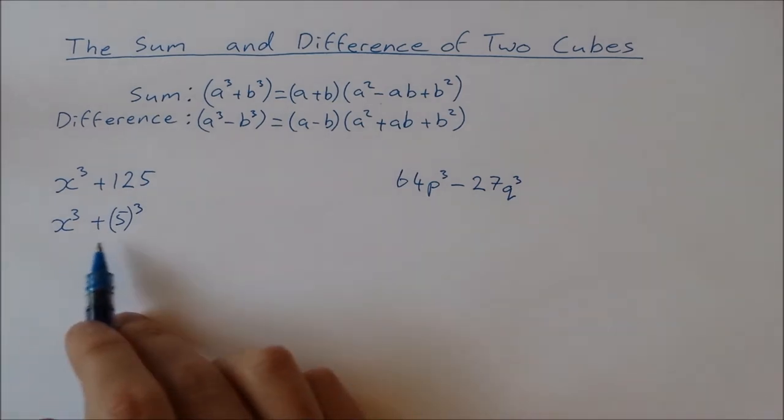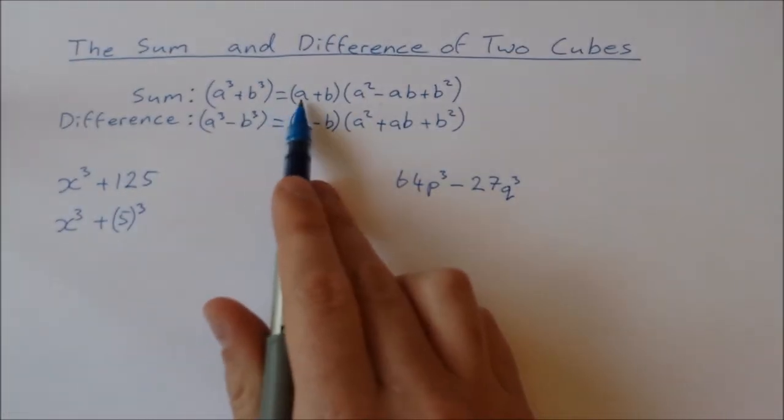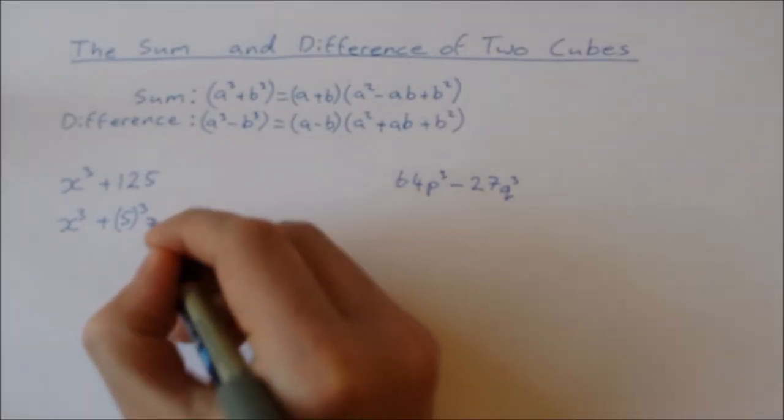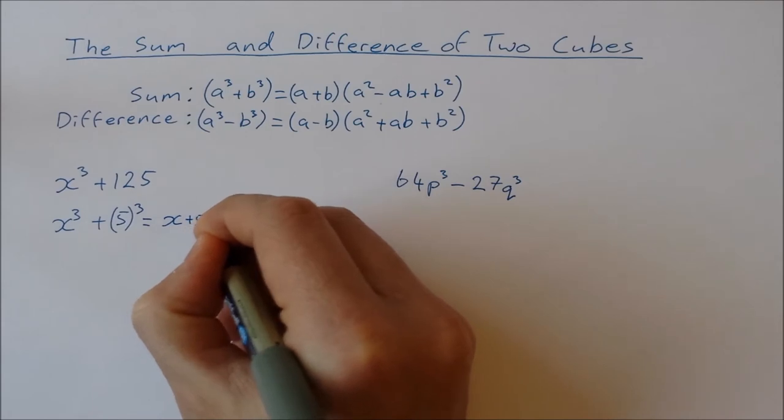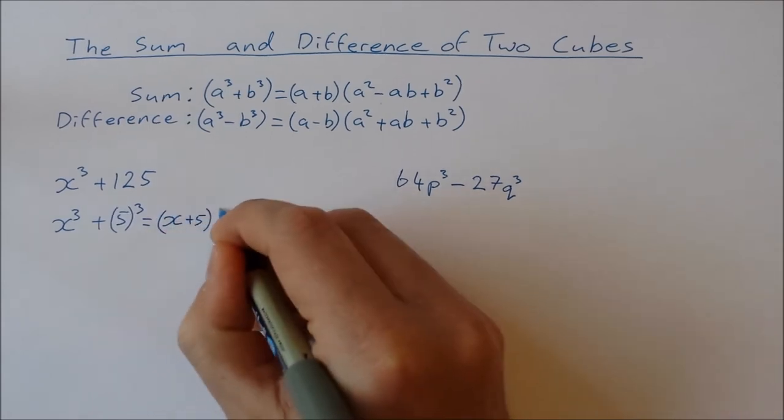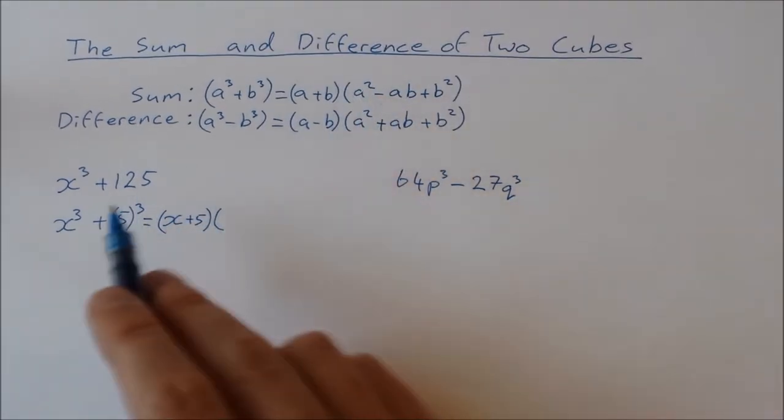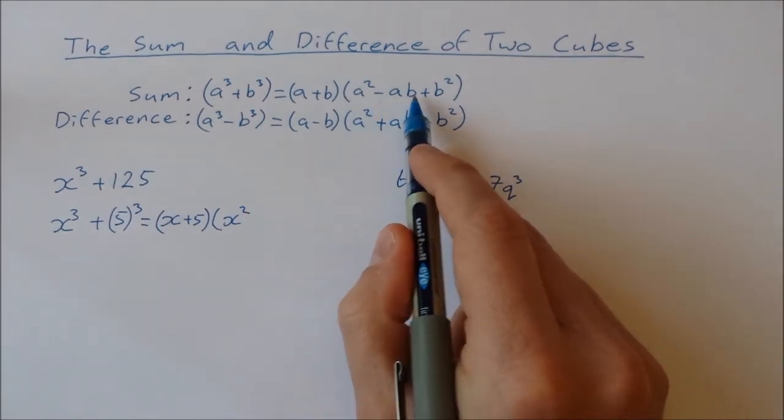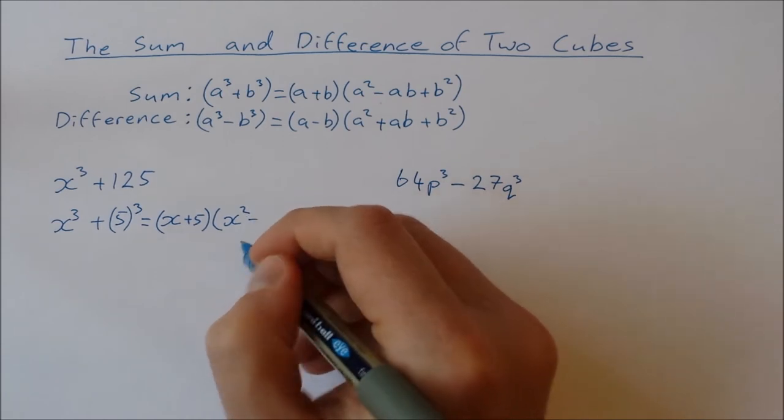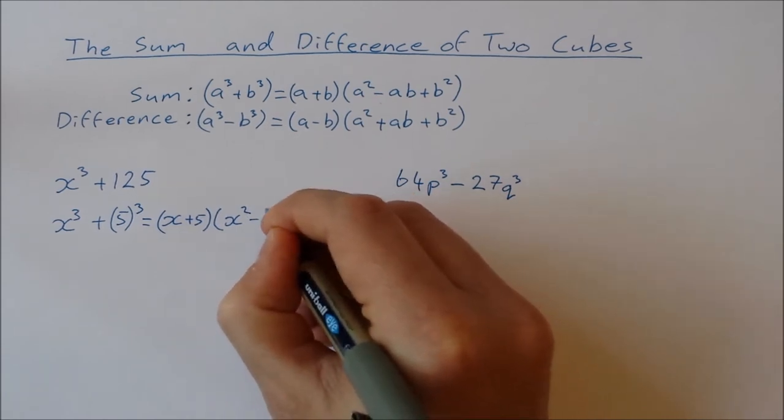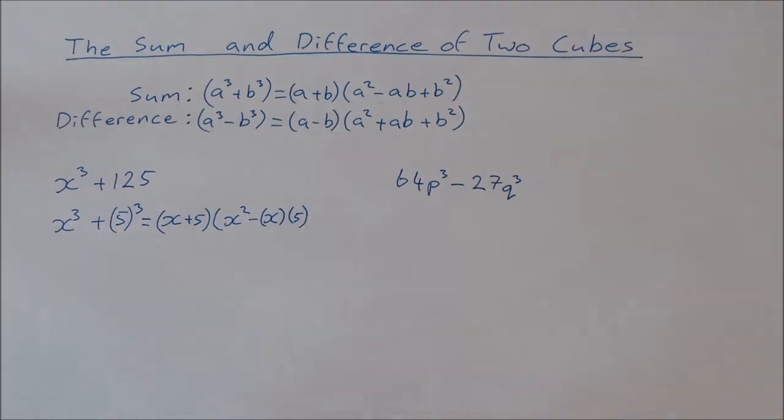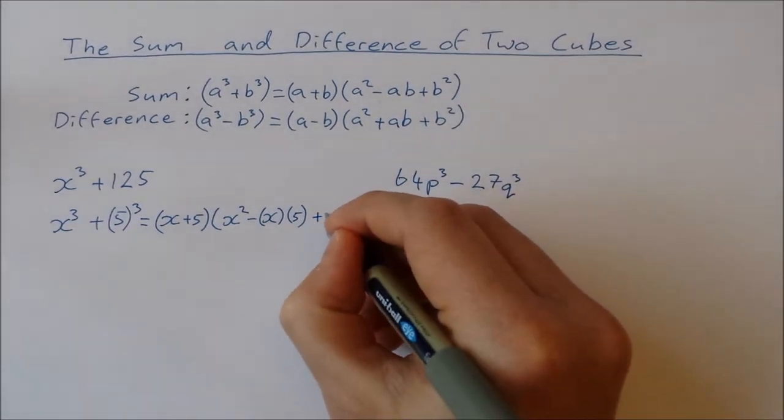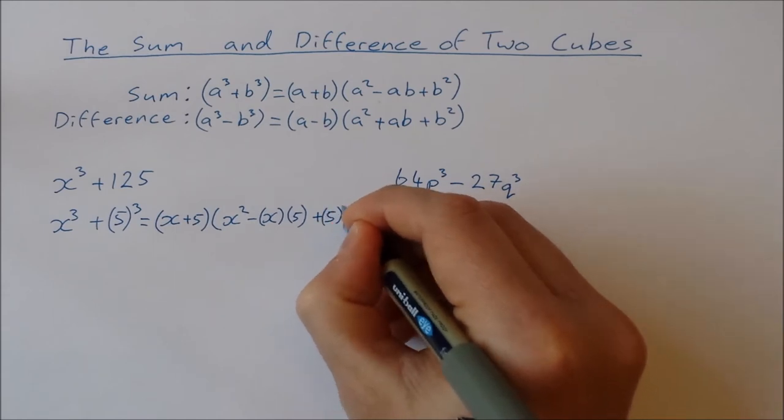So using my formula for the sum of two cubes, it's going to be the first plus the second. So that's going to be equal to x plus 5. Then it's going to be the first squared. So that's x squared minus the first times the second. So minus x times 5.